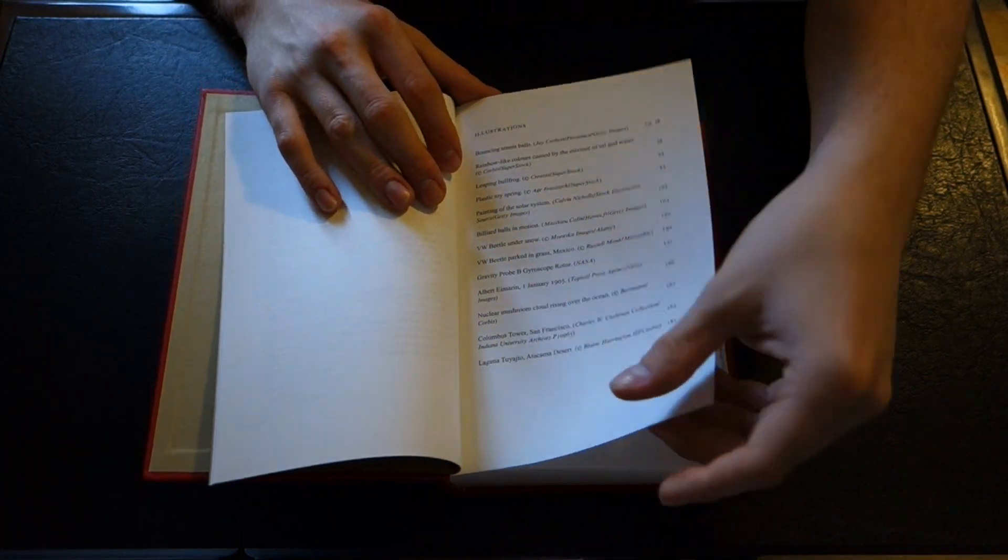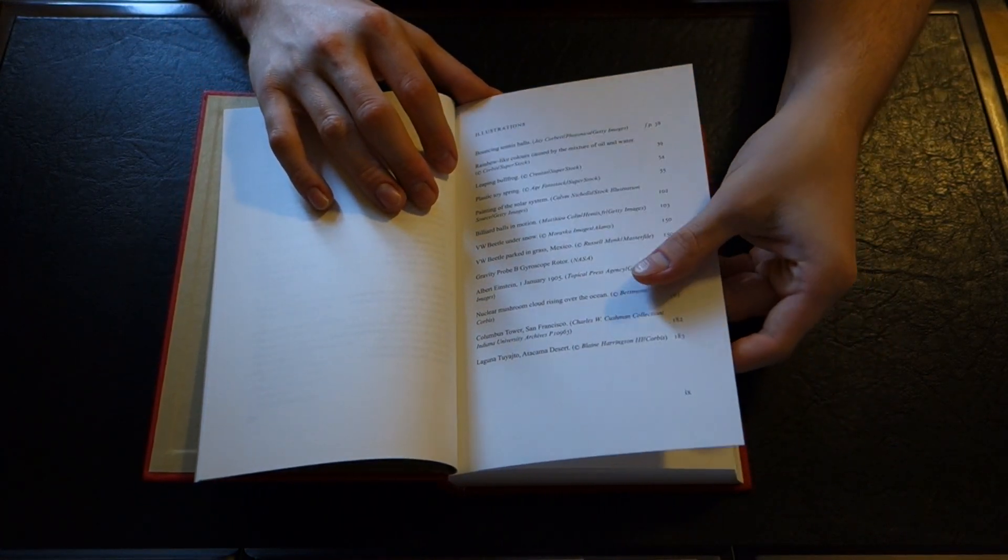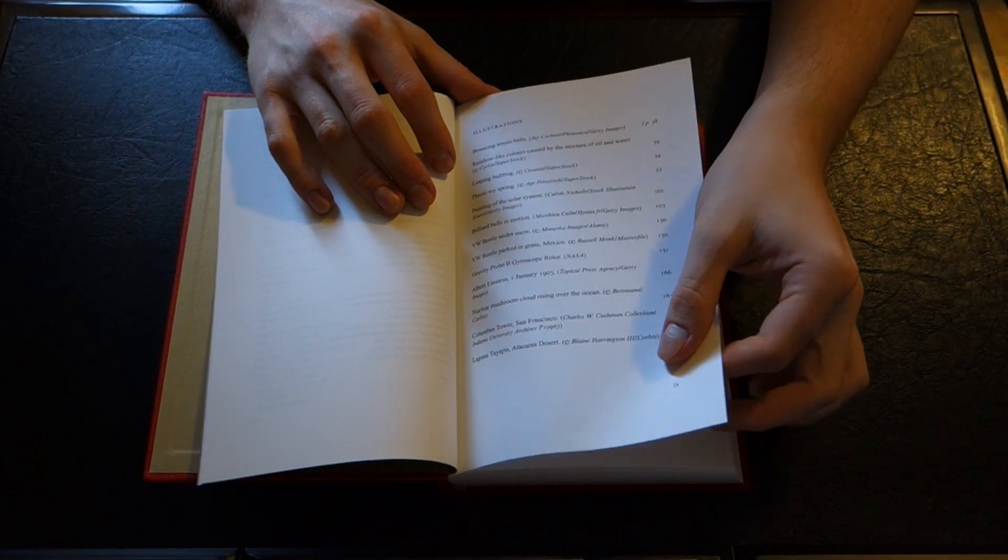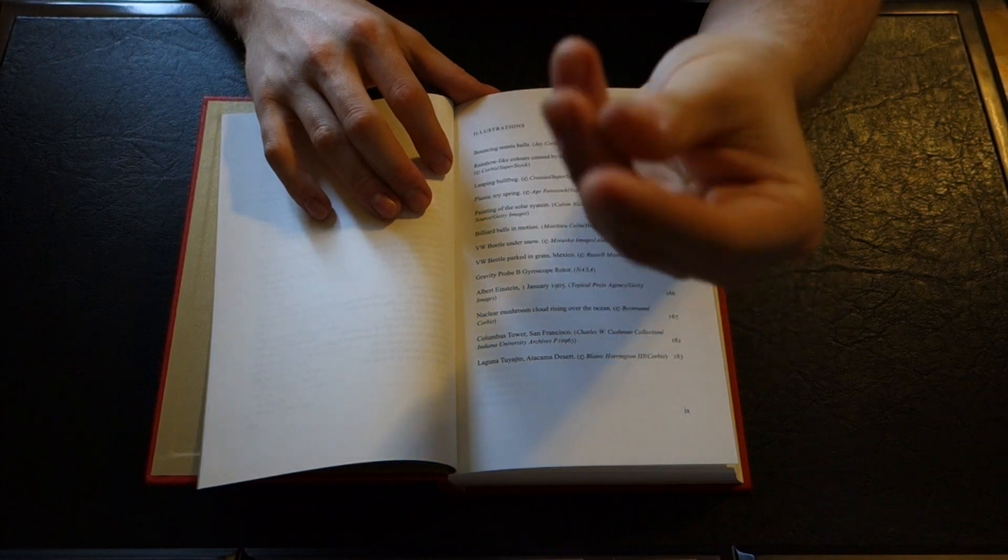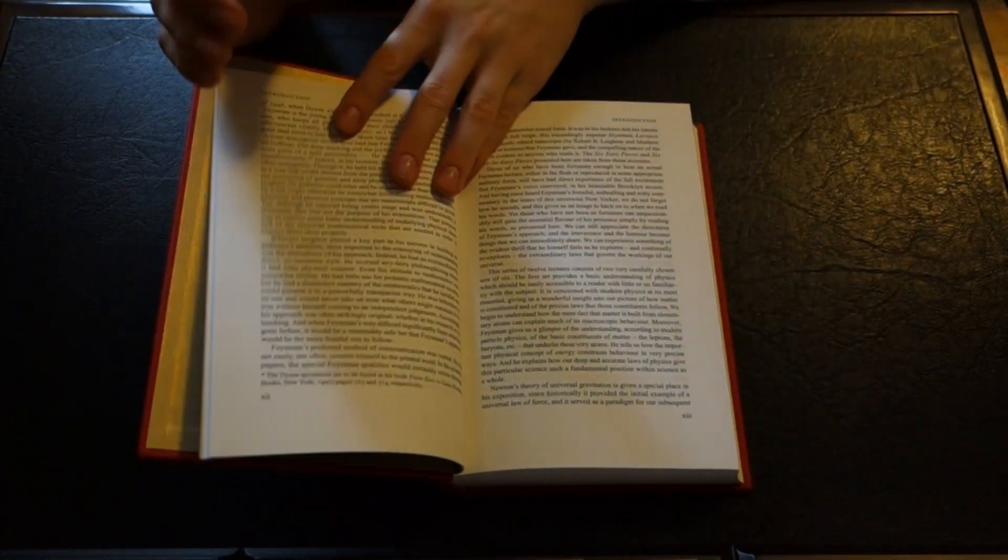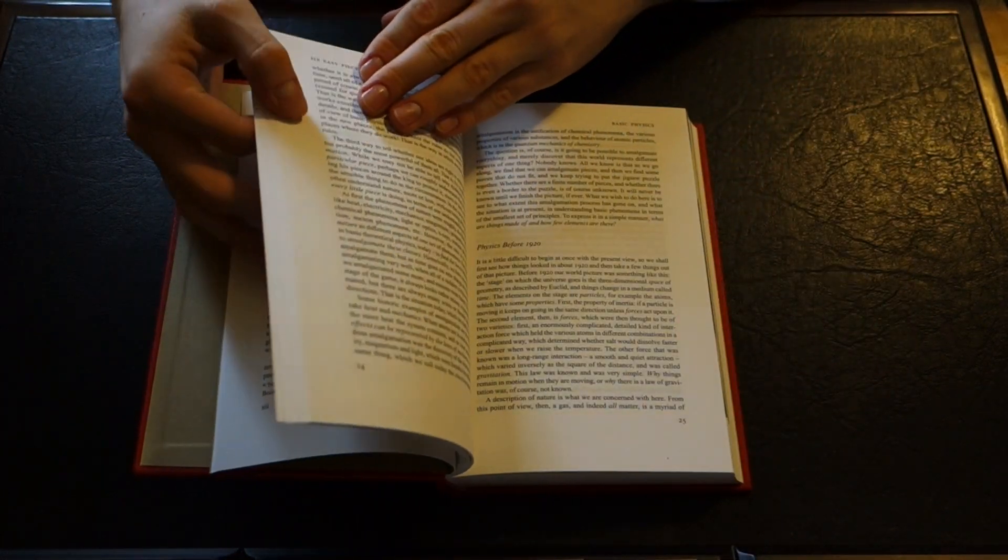Actually, before we do that, just so you know, like all Folio Society books, they're printed on acid-free neutral paper, so they're a little bit thicker and they won't degrade with the acidity and oils from your hands when you use them. So let's jump in.